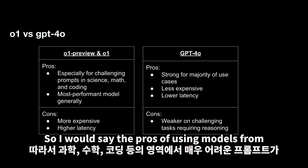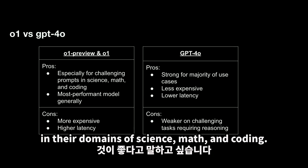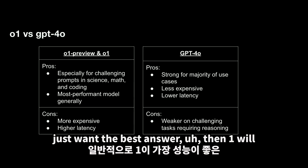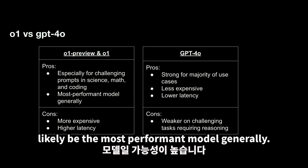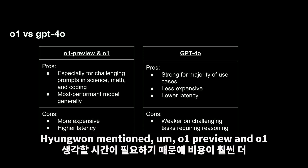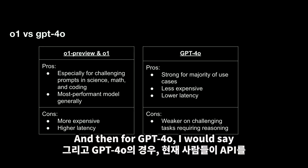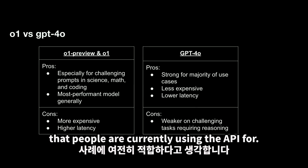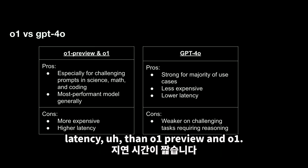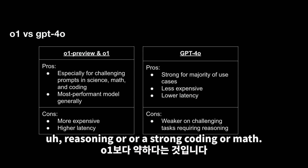The pros of using O1 preview and O1 are if you're trying to do tasks with extremely challenging prompts in domains of science, math, and coding. Also, if you just want the best answer regardless of other constraints, O1 will likely be the most performant model. The cons are that O1 preview and O1 require time to think — it's going to be more expensive and have much higher latency. For GPT-4o, it's still great for the majority of use cases people are currently using the API for, it's less expensive and lower latency, though it's weaker on prompts requiring reasoning, strong coding, or math.